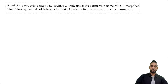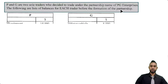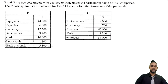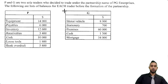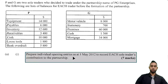We have a partnership question. It says P and G are two sole traders who decided to trade under the partnership name of PG Enterprises. The following are lists of balances for each trader before the formation of the partnership. We have a table for P with equipment, payables, inventory, receivables, cash, loose tools, and bank overdraft. And we have a similar table for G with motor vehicle, stationery, premises, cash, and mortgage. First, we are required to prepare individual opening entries as at 1st May 2012 to record each sole trader's contribution to the partnership — seven marks.